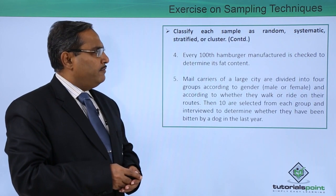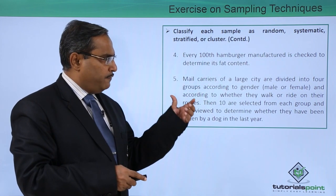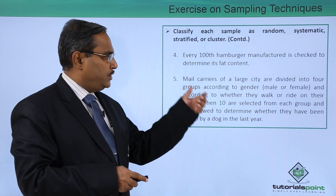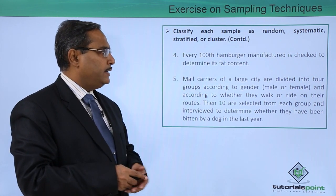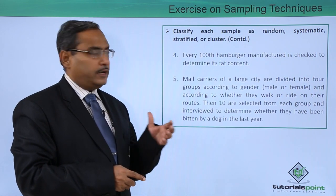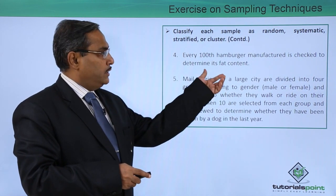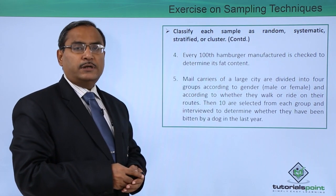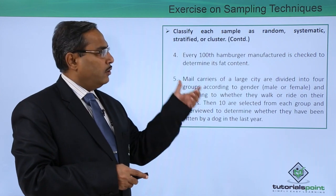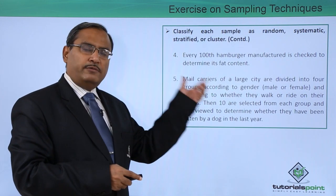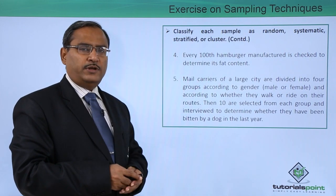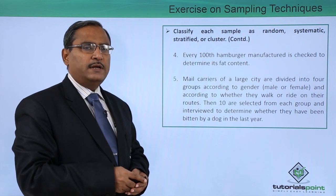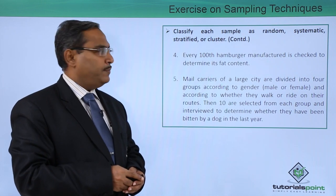Every hundredth hamburger manufactured is checked to determine its fat content. Here we are selecting every hundredth hamburger, so from that we get the idea that this is a good example of systematic sampling.